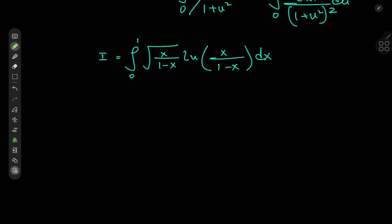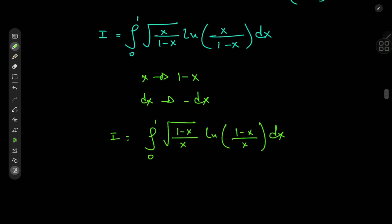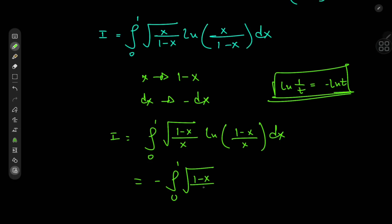With 0 and 1 as limits and x and 1 minus x terms present, let's investigate the symmetry under x to 1 minus x, so dx goes to negative dx. Under this substitution, i becomes the integral from 1 to 0 of root 1 minus x divided by x times the logarithm of 1 minus x divided by x, with a negative sign from dx. Switching limits and using log(1 minus x / x) equals negative log(x / 1 minus x), we get: i equals negative integral from 0 to 1 of root 1 minus x divided by x, times log x divided by 1 minus x, dx.